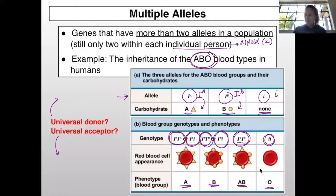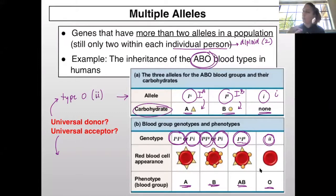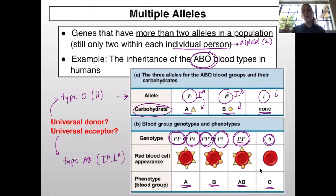These are glycoproteins that add carbohydrates to the surface of red blood cells. The universal donor — meaning blood that can go into anyone — would be type O, with the little i, little i genotype, because they don't have any sugars that would respond negatively. The universal acceptor — meaning they can accept blood from anybody — is type AB, with the I-A I-B genotype, because they have all possible sugars and won't elicit an immune response.